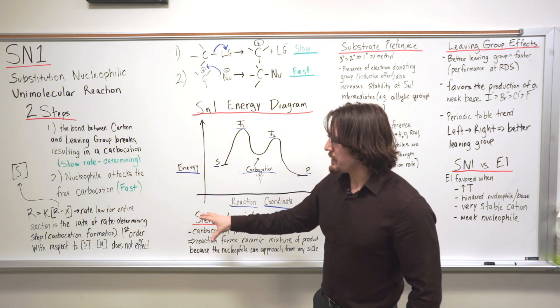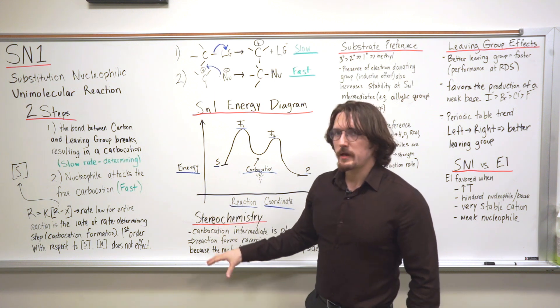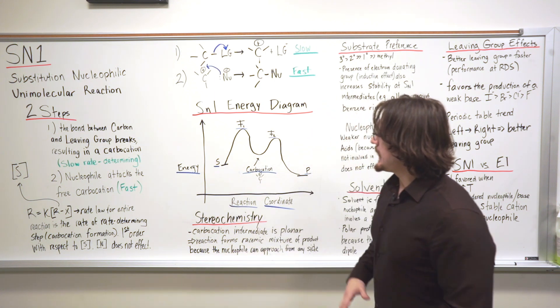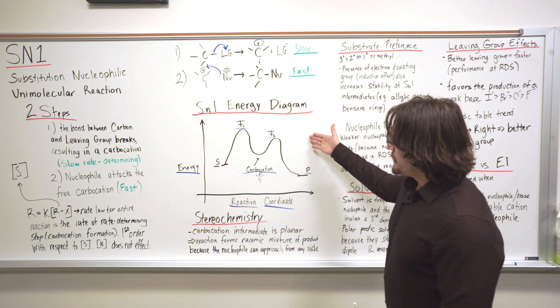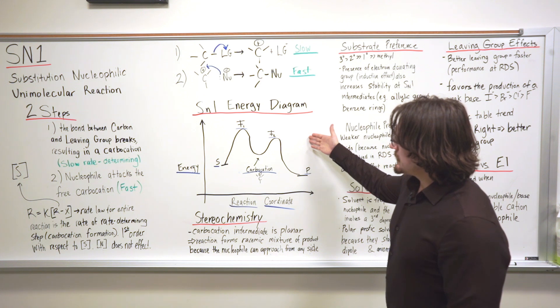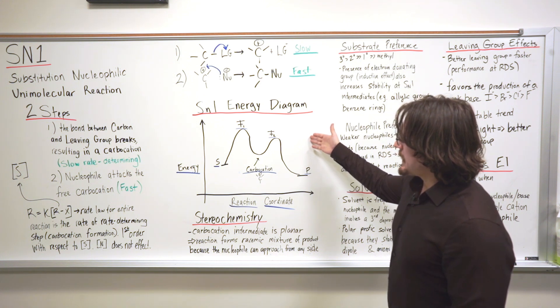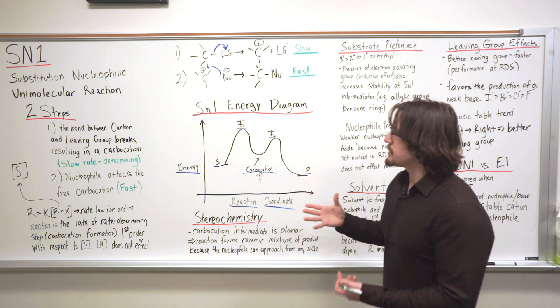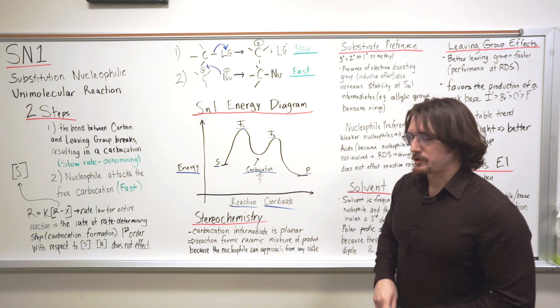Notice that there is no nucleophile concentration listed in this rate law, so the rate of the reaction isn't dependent upon the nucleophile at all. Now, take a look at this energy diagram — this is the energy diagram for a typical SN1 reaction.